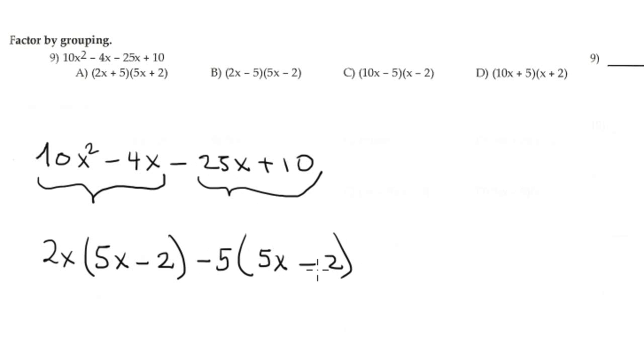Because inside the parenthesis we have 5x minus 2, so you try. This binomial and this binomial look exactly the same.